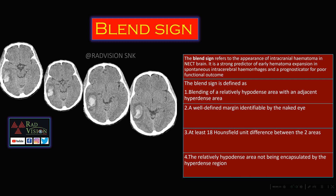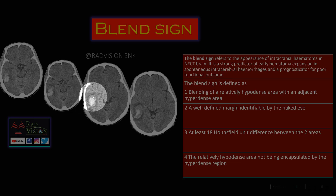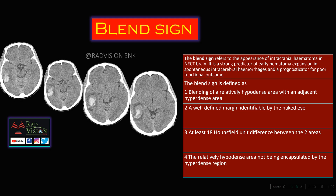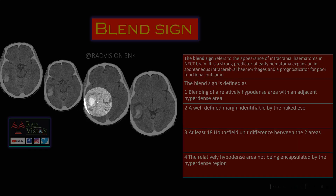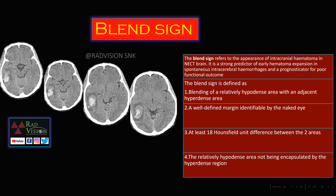Four criteria define the blend sign: blending of a relatively hypodense area with an adjacent hyperdense area; a well-defined margin identifiable by the naked eye; at least 18 HU difference between the two areas; and a relatively hypodense area not being encapsulated by the hyperdense region. Here you can clearly see the margin between the hypodense and hyperdense areas. This is the typical blend sign and is a predictor for hematoma expansion.